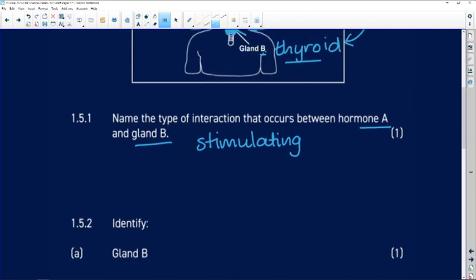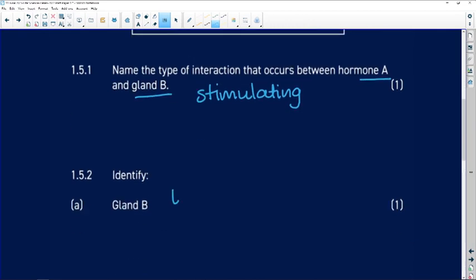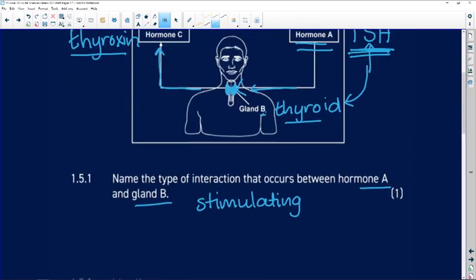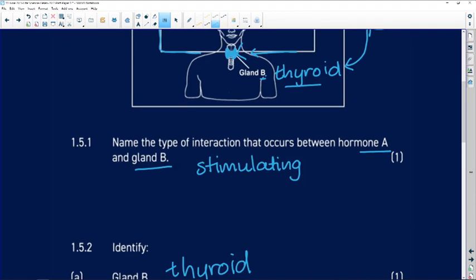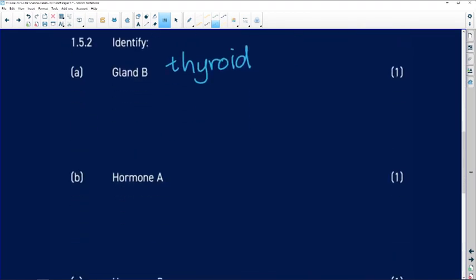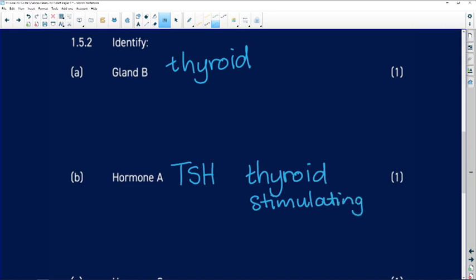Identify gland B. We've already identified it as the thyroid gland. Identify hormone A. We've already identified it as thyroid stimulating hormone. Don't fall into the habit of just writing the abbreviation. Explain it or expand that abbreviation. So thyroid stimulating hormone.